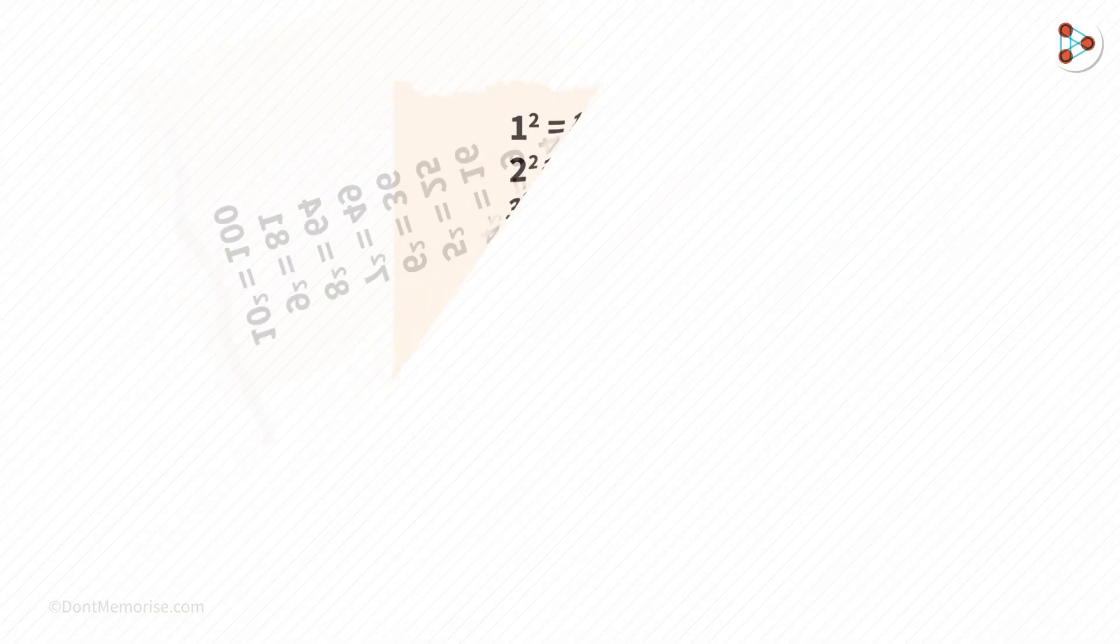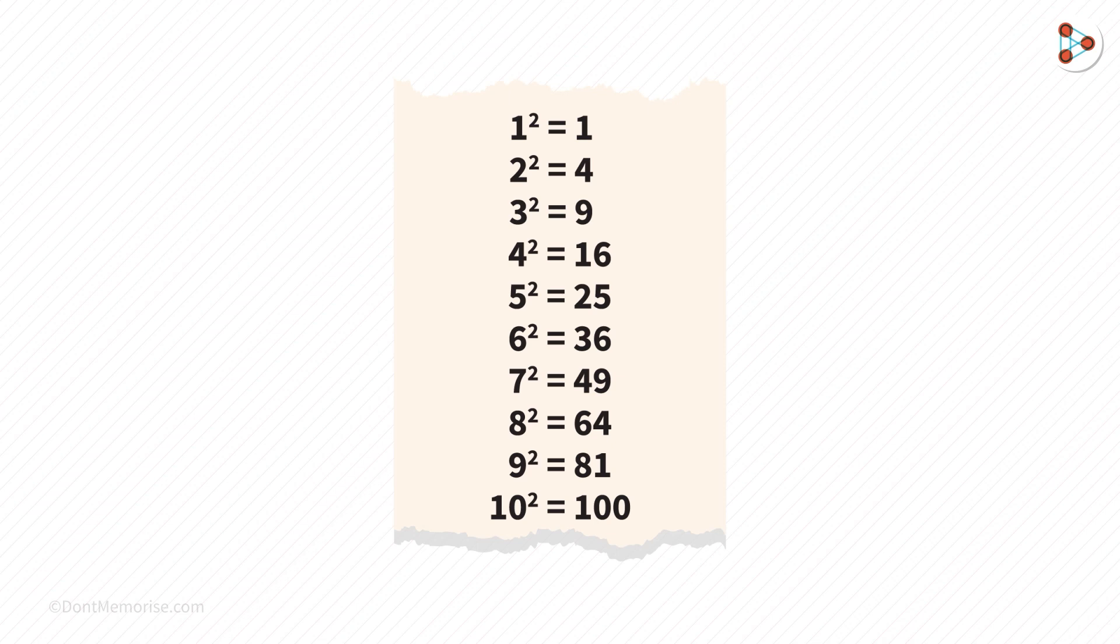Firstly, we have to know the simple squares of numbers from 1 to 10. One thing you can observe here is that the units digits 1 and 1, 4 and 4, 6 and 6, 9 and 9 are the same.